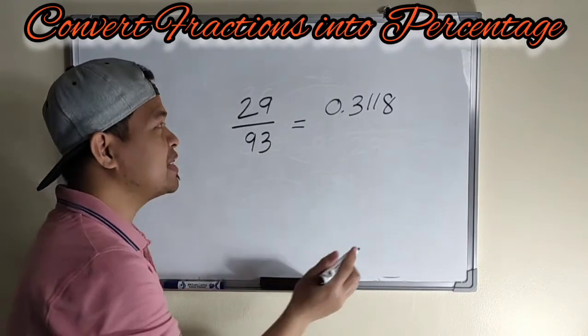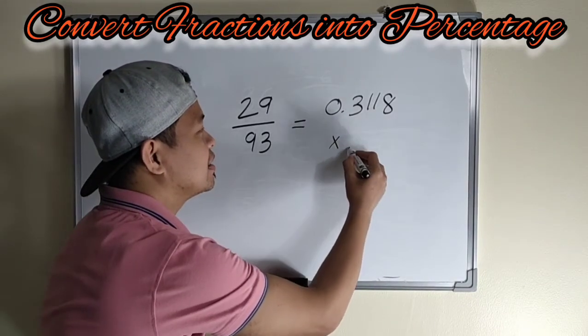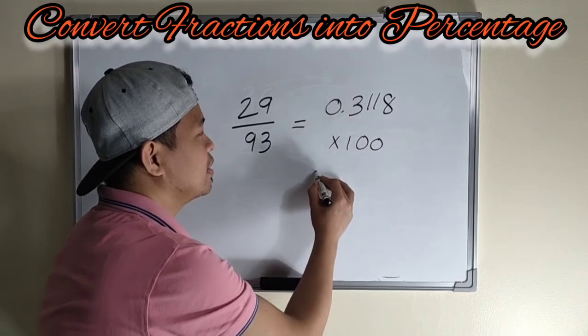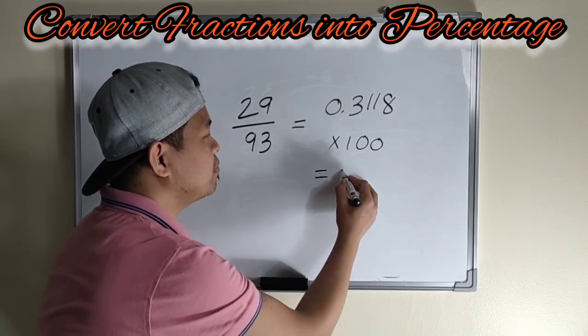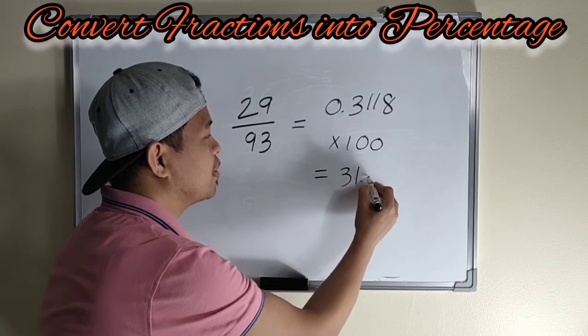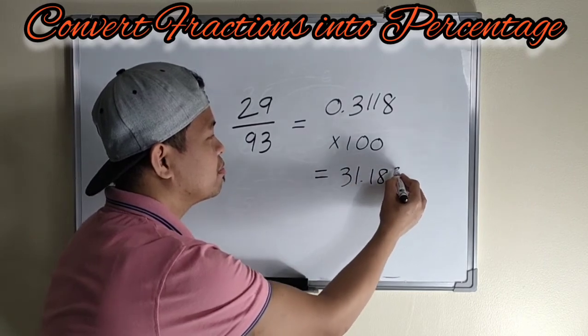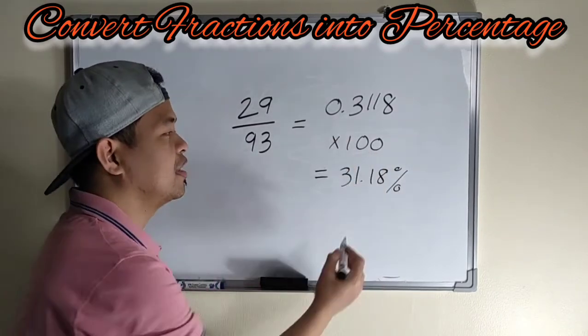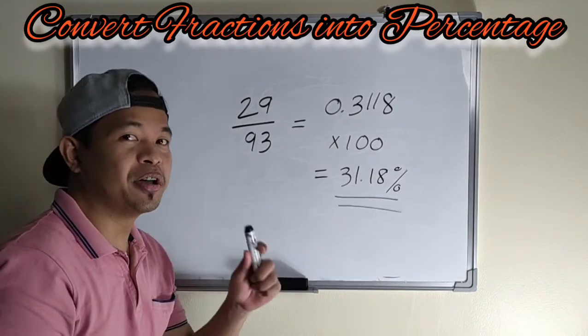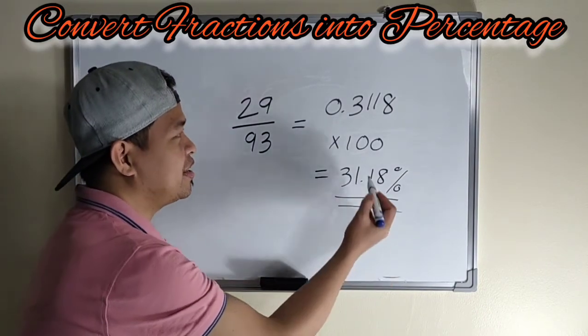Then to get the percentage times 100 is equal to 31.18%. So ayan po. Okay po ba? Naintindihan nyo?